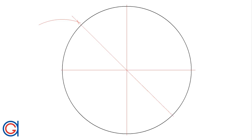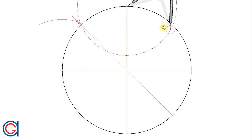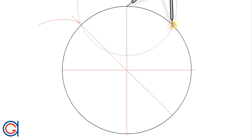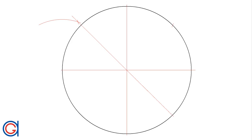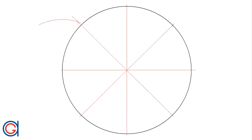The next step is to scribe the same radius to the right side of the circle and then draw another diameter from this point. So now we have divided the circumference into eight equal parts, as can be seen here.